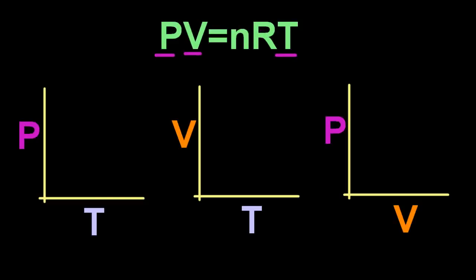So R is a constant, the gas constant, so we won't be looking at graphs with that in it. And N is the number of moles. I can never remember them asking about N.